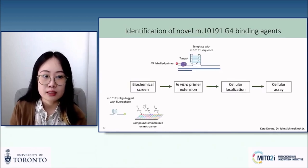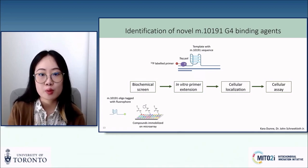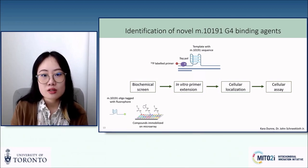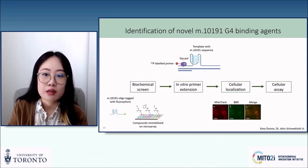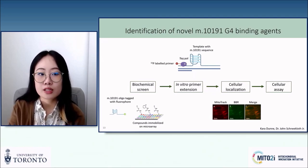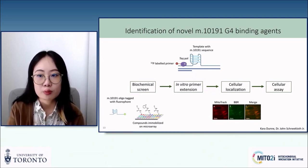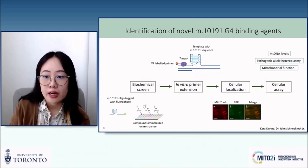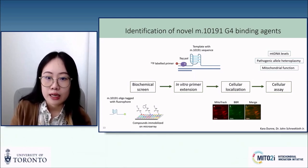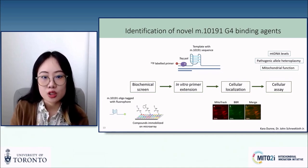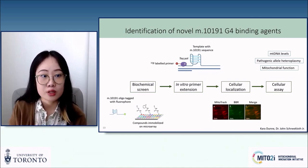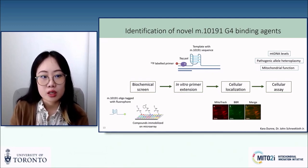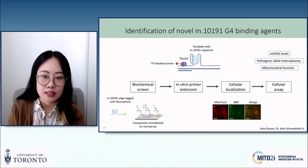For compounds like C50 that display potent inhibition of polymerase processivity, we then move to characterize their cellular localization. This is an example with berberine — since the compound itself is fluorescent, we were able to use co-localization with MitoTracker as a measure of whether berberine localizes mainly to the mitochondria in cellular contexts. Lastly, we characterize the cellular effects of these compounds. We look at mitochondrial DNA quantity levels as well as the change in pathogenic allele heteroplasmy over an eight-week treatment period. We also use Seahorse assay as a measure of mitochondrial function to see if prolonged treatment can improve the disease phenotype seen in patient cells.